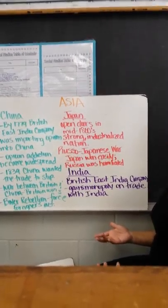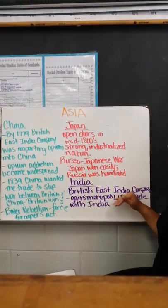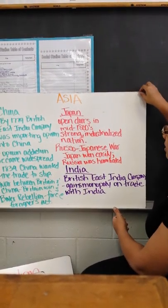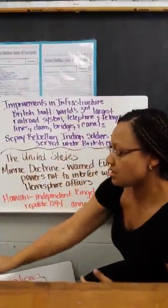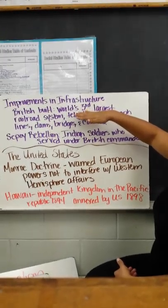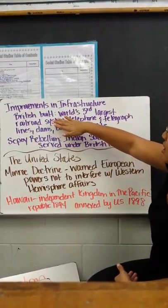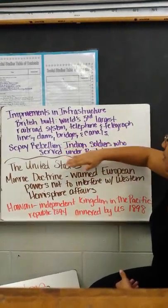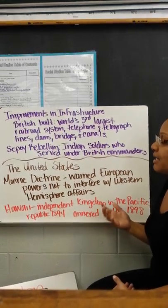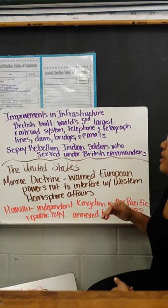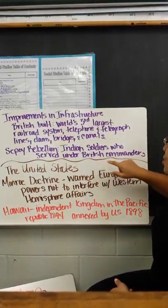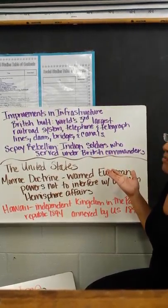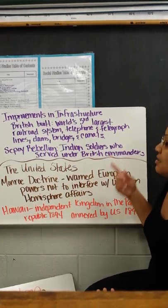India is a very popular country today for cheap labor. The British East India Company, as we saw in China, was also in India. They gained a monopoly on trade with India. So although Britain lost the American colonies, they were still making money. Britain improved India's infrastructure — roads, buildings, highways. The British built the world's third largest railroad system, along with telephone and telegraph lines, dams, bridges, and canals — all in India. There was also a Sepoy Rebellion where Indian soldiers who served under British commanders rebelled to try to get Britain out, but that was not successful. The British remained and squashed the rebellion. It would not be until Gandhi that India would gain its independence from Britain.